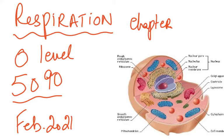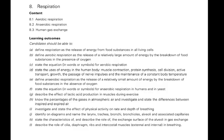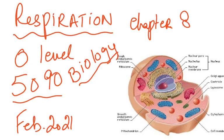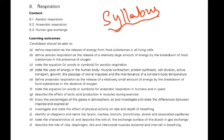We start the chapter on respiration. This is O-Level Biology, we are doing the 5090 Syllabus Code, and this is Chapter 8 which is on respiration. Now the first thing that we look at is the syllabus — that is the routine we follow: we look at the syllabus first as we start the chapter and then we look at the syllabus at the end of it.